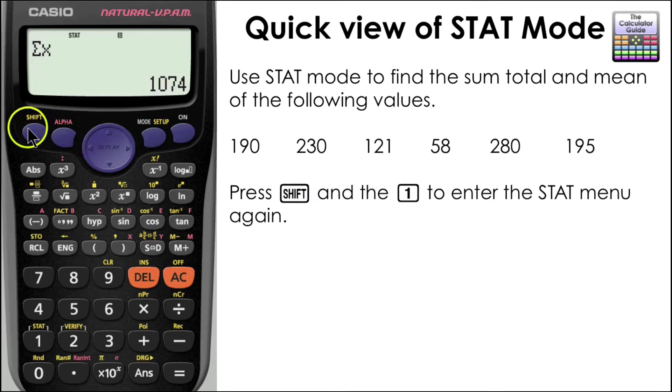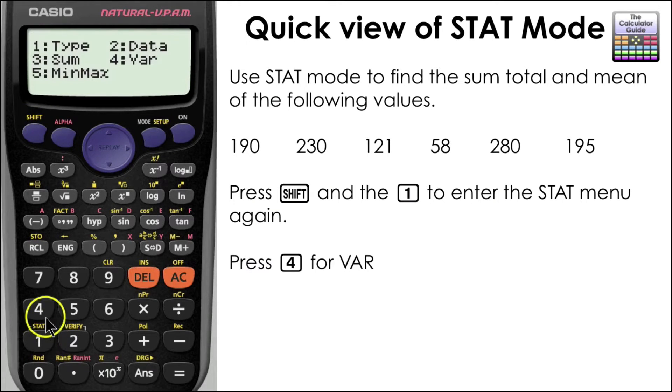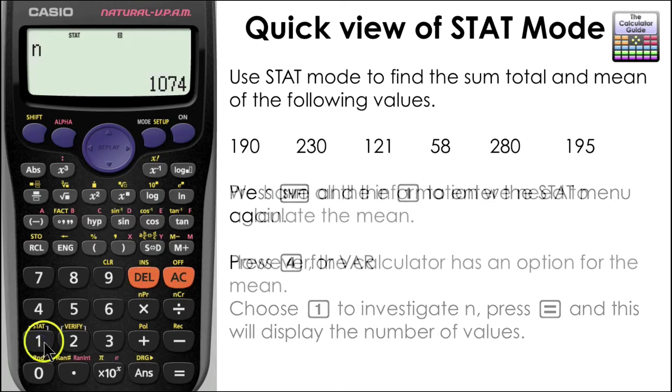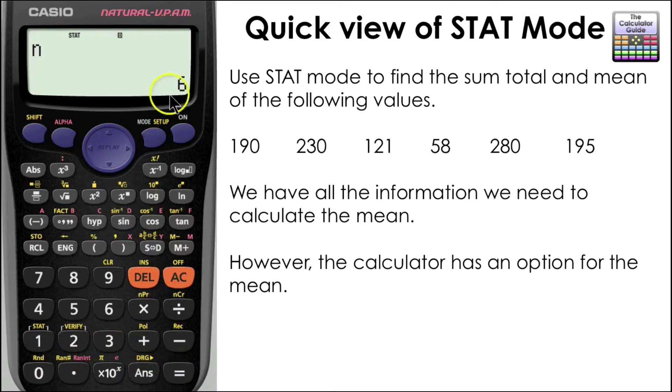Let's go back to STAT mode again. Press SHIFT and then 1, and this time we're going to press 4 for VAR. I'm not sure whether this stands for variable or variance. We're going to choose 1, just to have a little look at what n means. And it's 6, well it's the number of values.